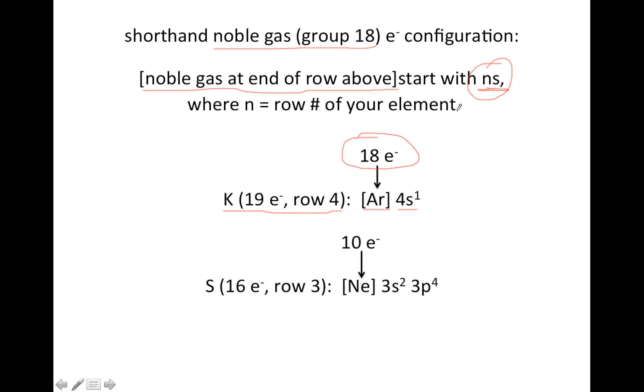So now, let's go and do sulfur. If we go up one row from sulfur all the way to the right, we get neon, is the noble gas, and that takes care of 10 electrons.